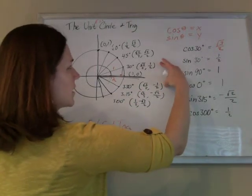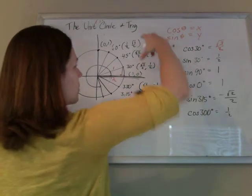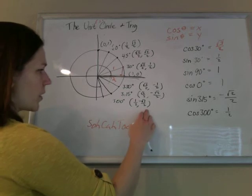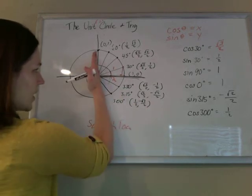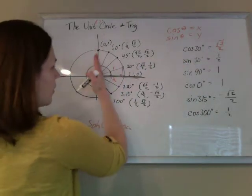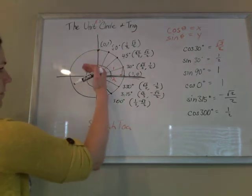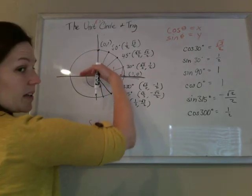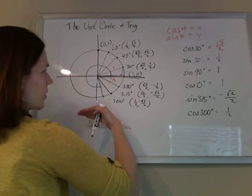You'll notice there are tons of patterns in this unit circle — those are the same, those are the same, those are the same. The cosine is positive on this side because the x-values are all positive here, and the cosine is negative in these quadrants. Similarly, since the sine is the y-value, the sine is positive in these quadrants and negative in those quadrants.